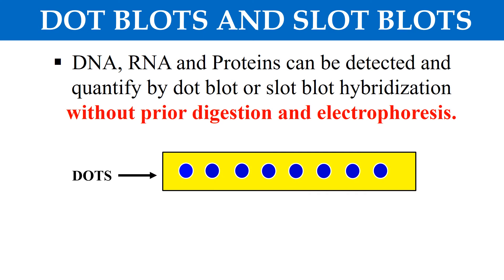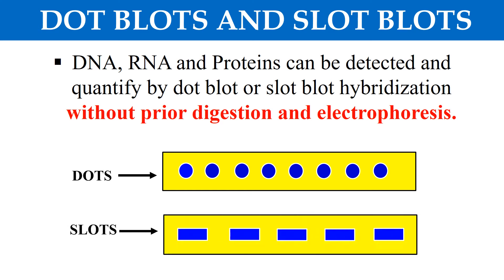In the case of dot blot, the sample is applied or blotted on the membrane in the form of circular dots. While in the case of slot blot, the sample is loaded or blotted on the membrane in the form of rectangular slots. So, on the basis of the shape of the sample blotted on the membrane, we categorize these two techniques as dot blot and slot blot hybridization.